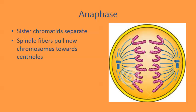In anaphase, we have actual separation of the sister chromatids. During metaphase the chromosomes are still intact with one another, but during anaphase the spindle fibers — which attached during metaphase — pull apart the sister chromatids. So instead of having an X-shaped chromosome, you now have individual chromatids being pulled toward opposite ends of the cell, toward the centrioles.